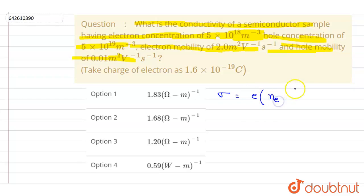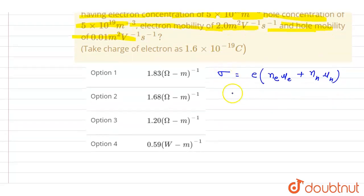the concentration of electron times mobility of electron plus concentration of hole times mobility of hole. So you have the values given here, you can just put the values here.